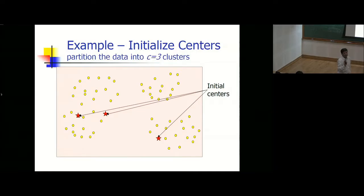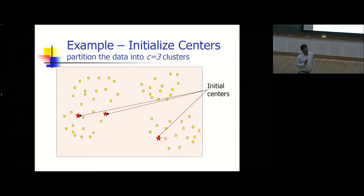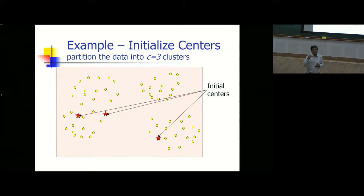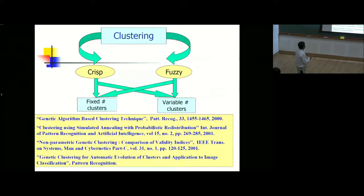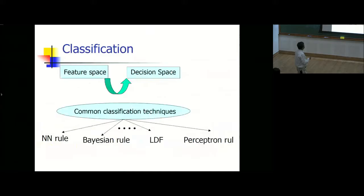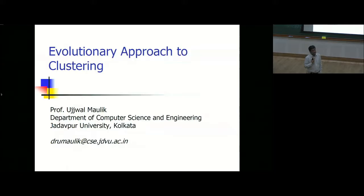For supervised learning we discussed KNN. For unsupervised, let us discuss one very easy algorithm that is heavily used in industry. Assume all yellow points are test points — I don't know the class of anyone. Let us assume there are three classes. If you don't even know how many classes there are, you are in more trouble, but initially let us assume we know the number of groups.